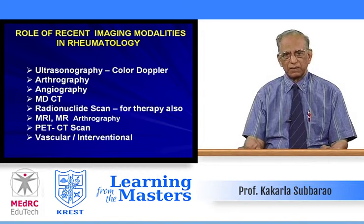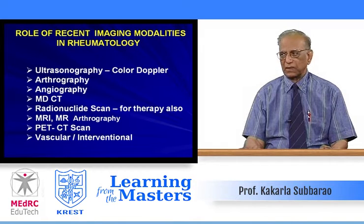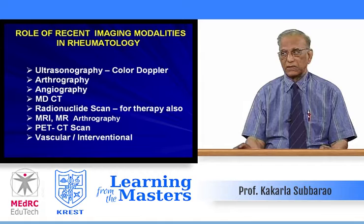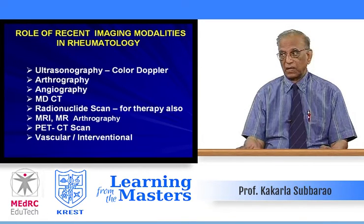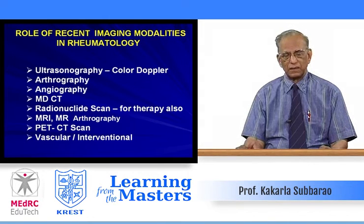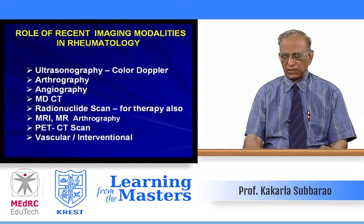MDCT — multi-detector CT — is common. Radionuclide scan is also used for therapy in cases of synovial thickening and granulomatous disorders. MRI and MR arthrography: after the advent of MRI, conventional arthrography is almost not done. Recently, PET-CT scan and occasionally vascular and interventional radiological methods are also used.